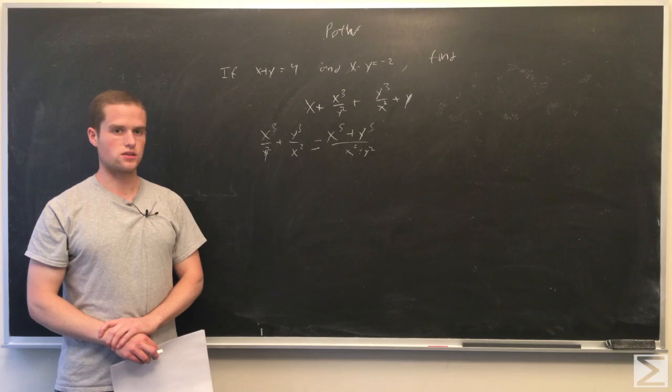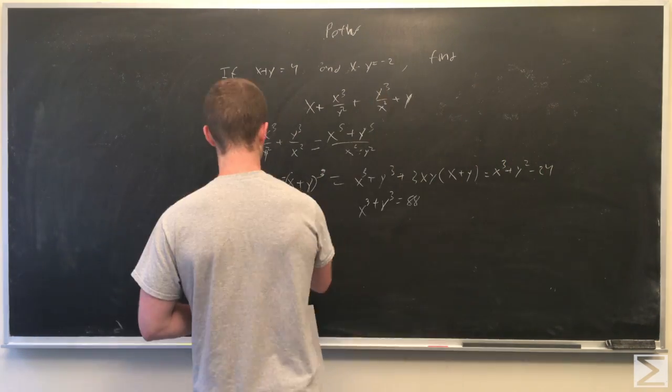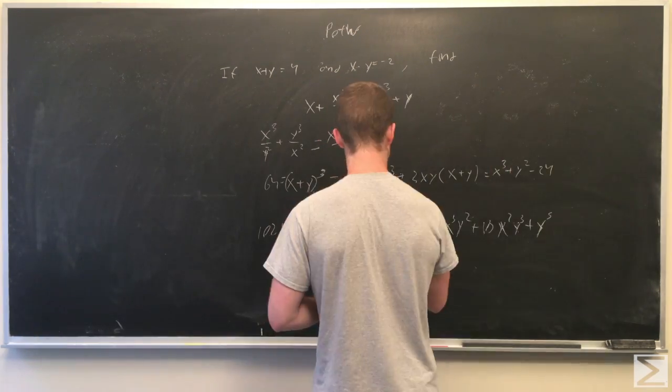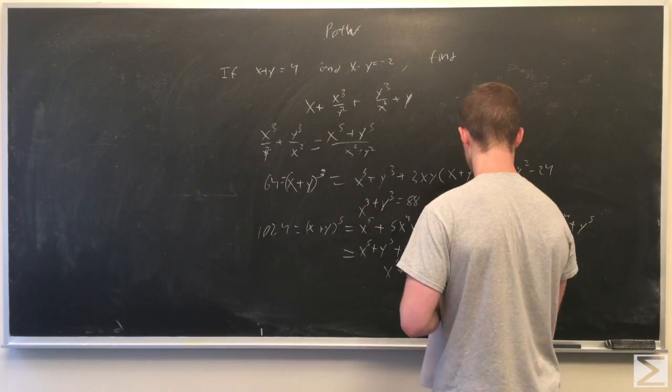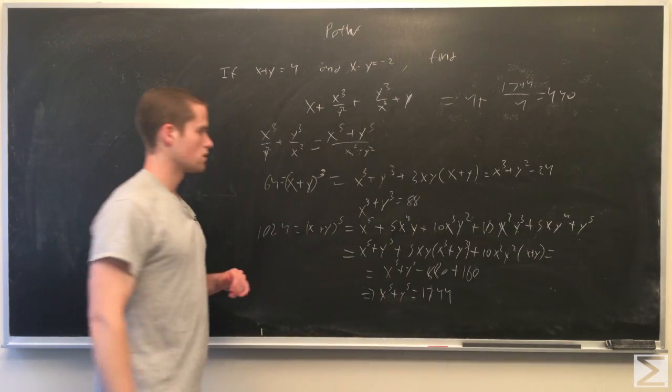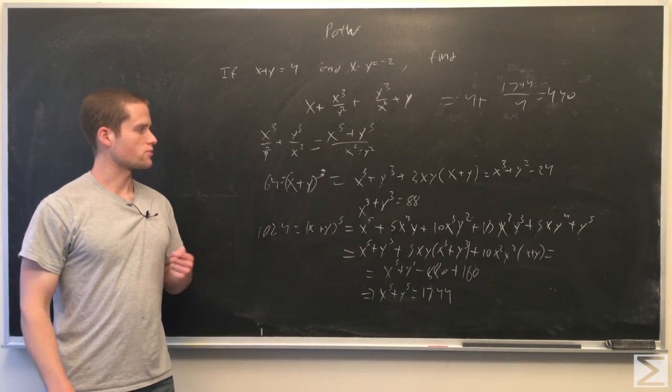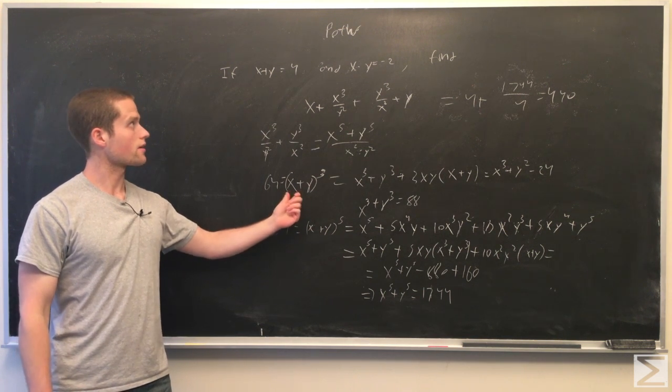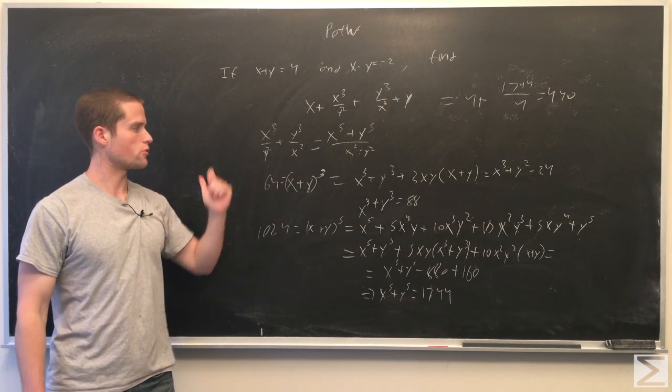So first we're going to find x cubed plus y cubed. So this exercise is just doing a bit of algebraic manipulation. First we're going to take x plus y equals 4, cube both sides.